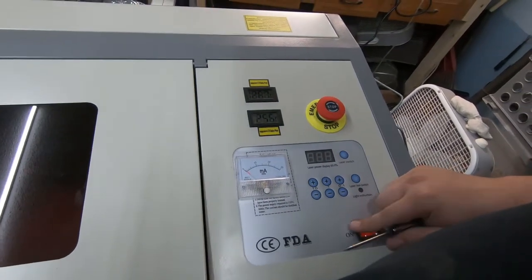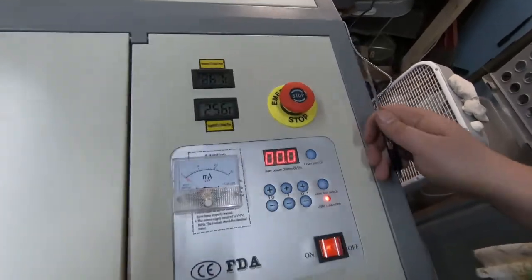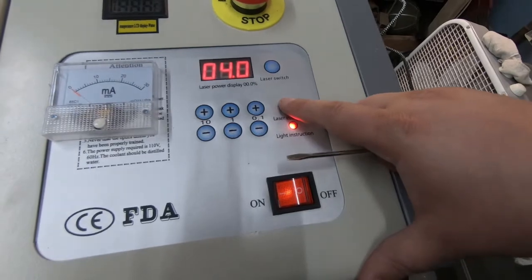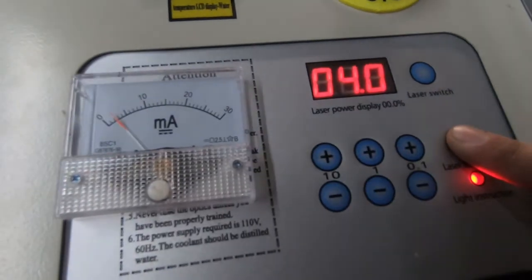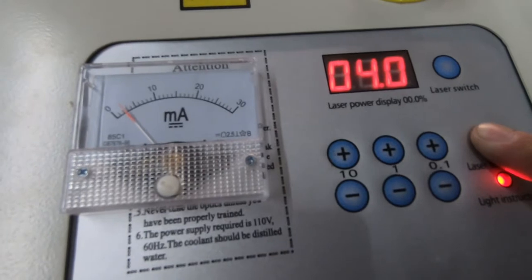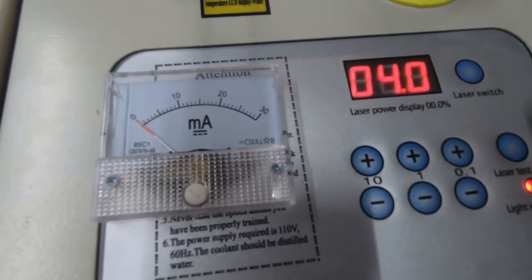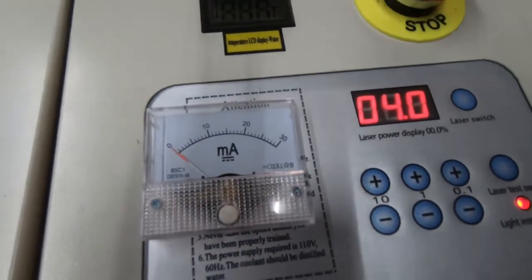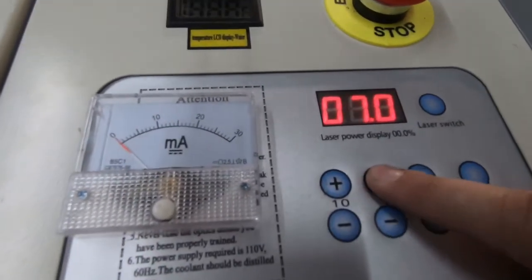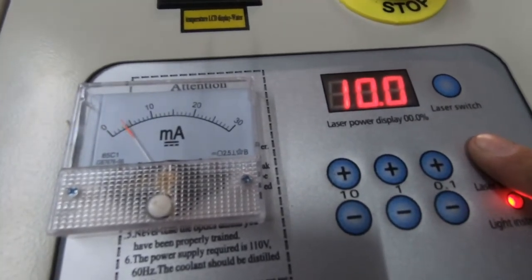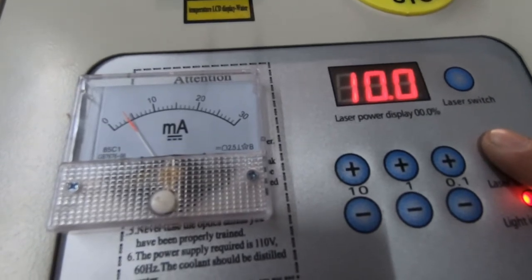So we will start with four percent. So we can see that at four percent on the laser we're looking at about two and a half milliamps. So let's look at 10. We're looking at four milliamps. So now we can go through all of the percentages and I'll write that down on a sheet of paper so I know what everything is.